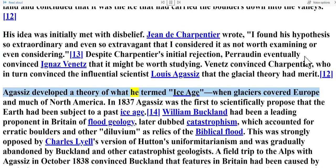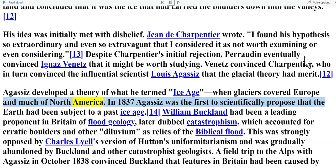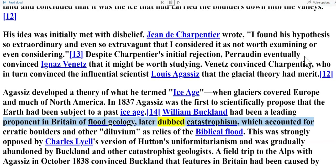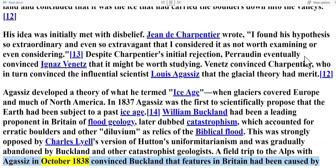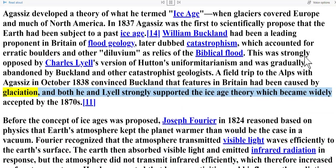Agassiz developed a theory of what he termed the ice age, when glaciers covered Europe and much of North America. In 1837, Agassiz was the first to scientifically propose that the earth had been subject to a past ice age. William Buckland had been a leading proponent in Britain of flood geology, later dubbed catastrophism, which accounted for erratic boulders as relics of the biblical flood. A field trip to the Alps with Agassiz in October 1838 convinced Buckland that features in Britain had been caused by glaciation, and the ice age theory became widely accepted by the 1870s.